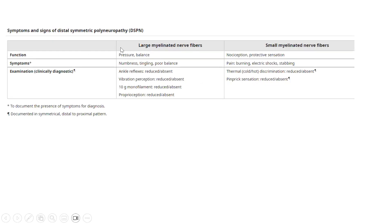This is an important chart from UpToDate showing the symptoms and signs of distal symmetrical polyneuropathy (DSPN) and how to assess whether there is involvement of large or small myelinated nerve fibers — a very frequently asked topic in exams. For large myelinated fibers, function is judged based on pressure and balance. For small myelinated nerve fibers, function is based on nociception and protective sensation.